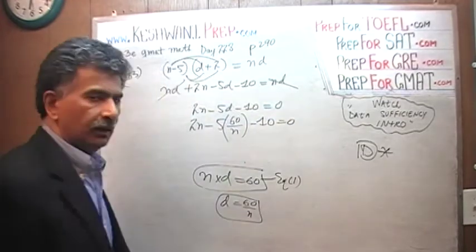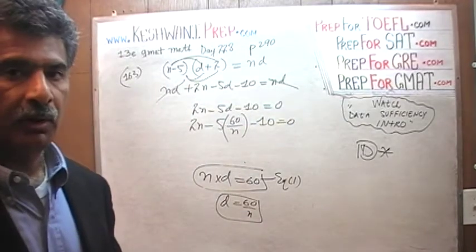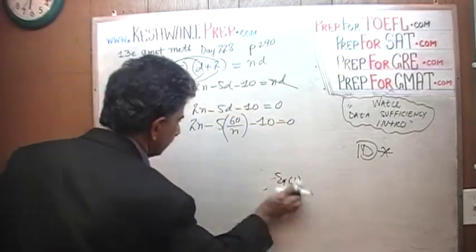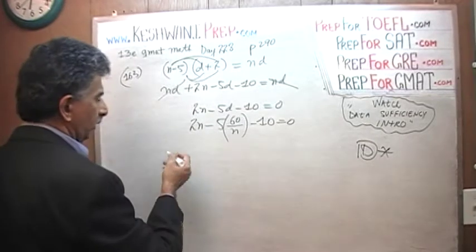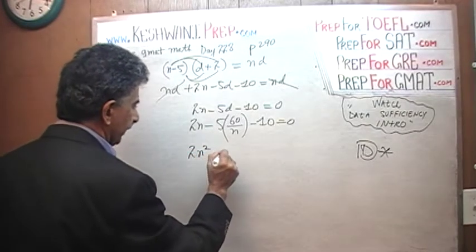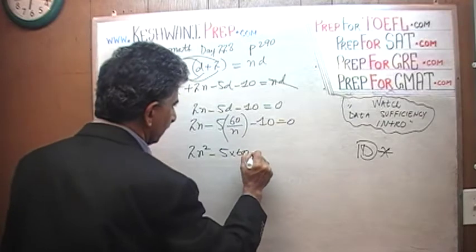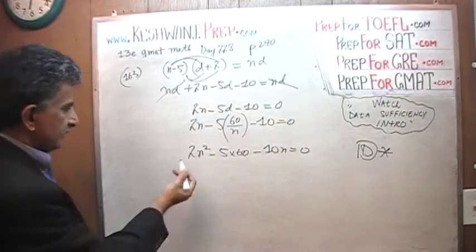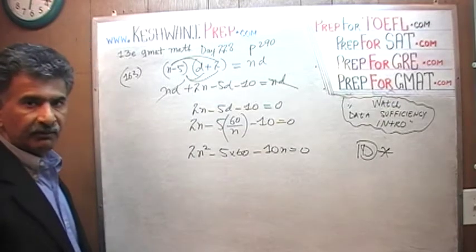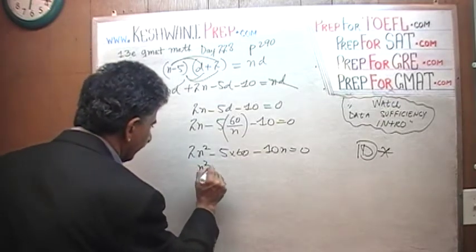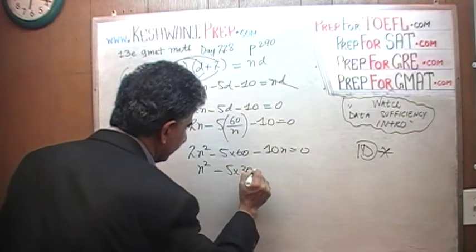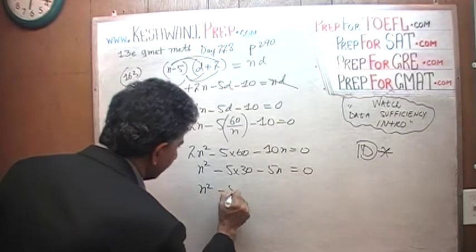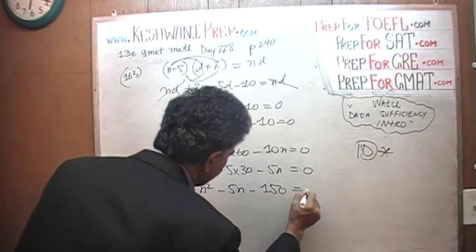As you can see, a quadratic equation is emerging. It may be a quadratic equation, but it can be solved. So, multiply the whole thing by N and we end up with 2N squared minus 5 times 60 minus 10N equals to 0. You have to pay attention. That's what it is. I see a 2 here, I see a 60 here, I see a 10 here. Let's divide the whole thing by 2. N squared minus 5 times 30 minus 5N equals to 0, which is same as N squared minus 5N minus 150 equals to 0.